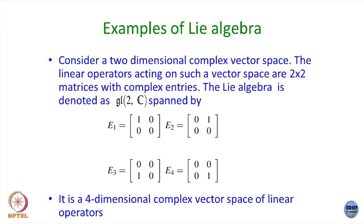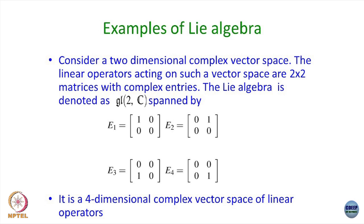What do I mean by basis states? Any arbitrary transformation can be written as a linear combination of these basis states — this is what you have done in quantum mechanics. You can say it is an 8-dimensional real vector space, or equivalently a 4-dimensional complex vector space, denoted gl(2,C).